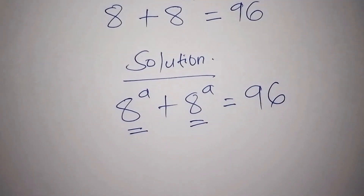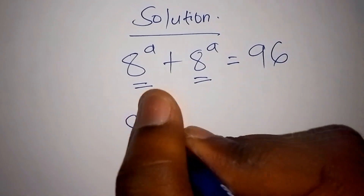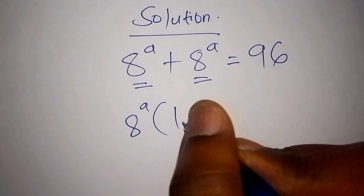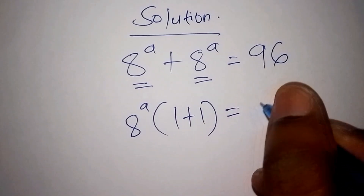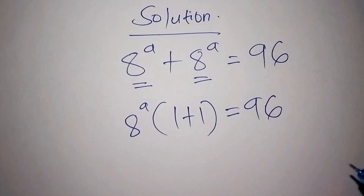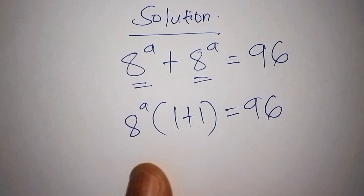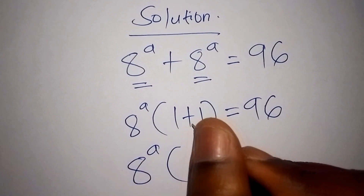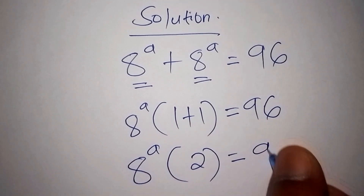This can be done by factoring out 8 to the power of A. We pick one 8 to the power of A, then into bracket 1 plus 1, close the bracket, equals 96. We work out the number inside the bracket: 1 plus 1 is 2, so 8 to the power of A times 2 equals 96.